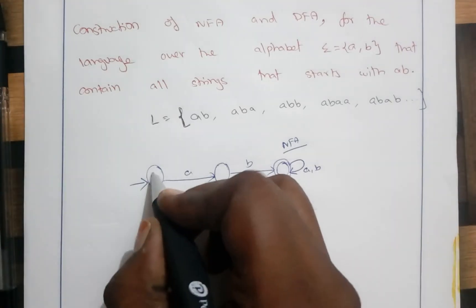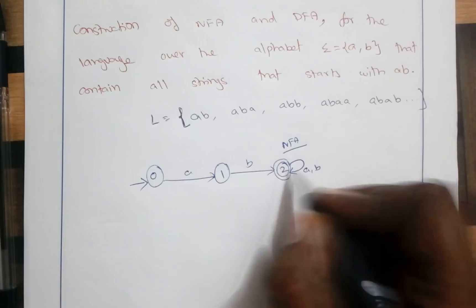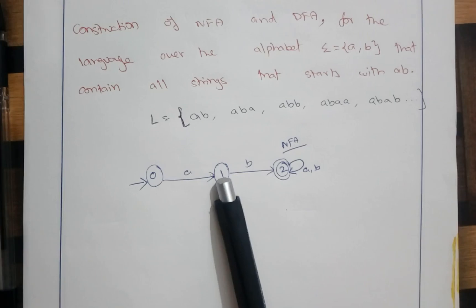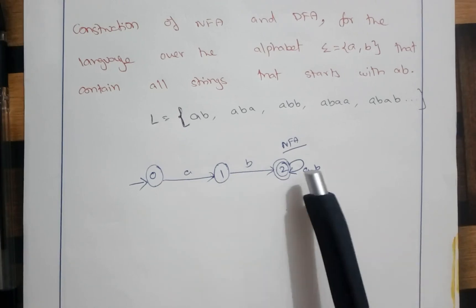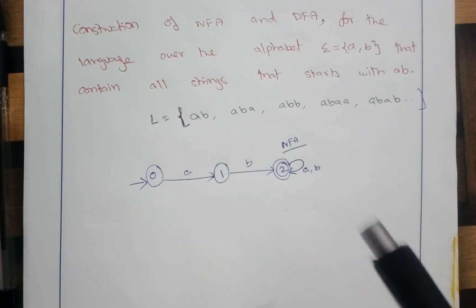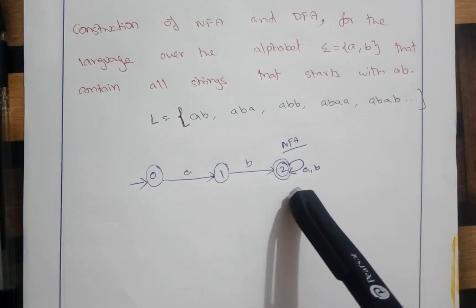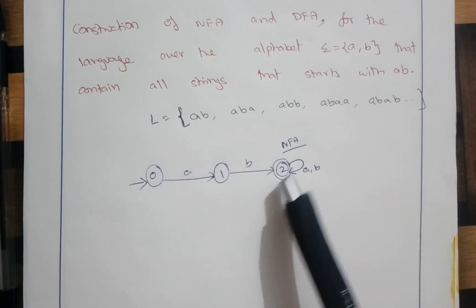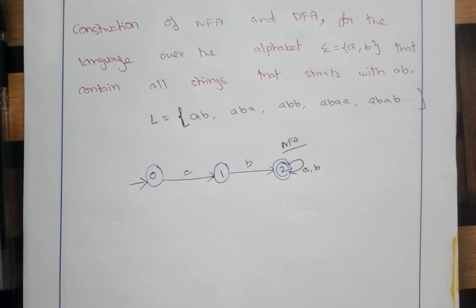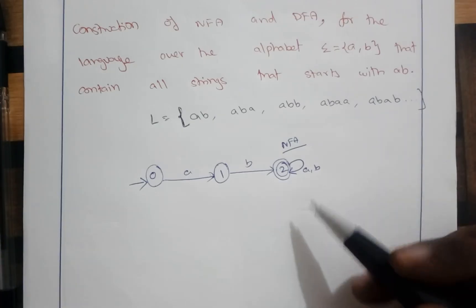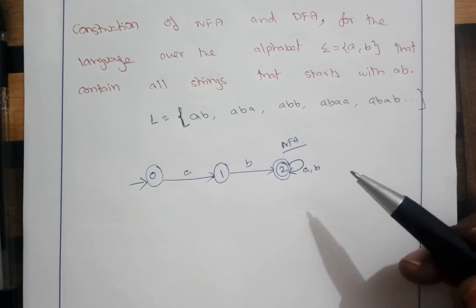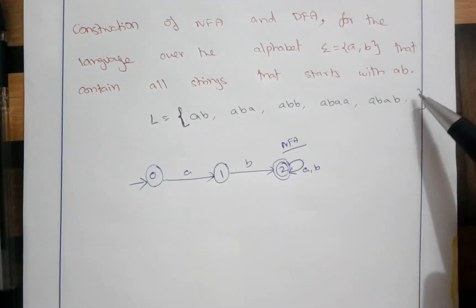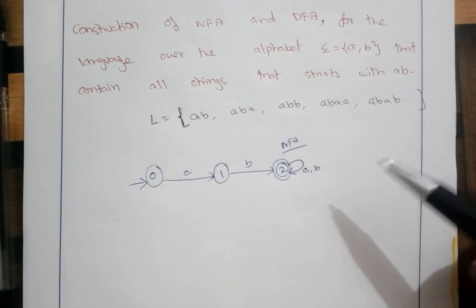The starting state is state 0. From state 0, if the input is A we go to state 1. From state 1, if the input is B we go to state 2. For either A or B input, we remain in state 2 itself — state 2 is the final state. This is a non-deterministic finite automaton that accepts all inputs starting with AB.